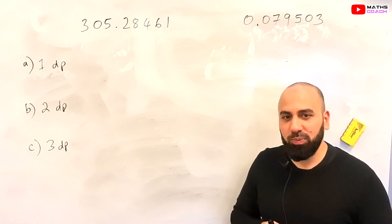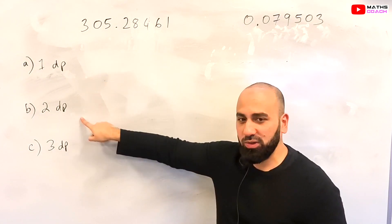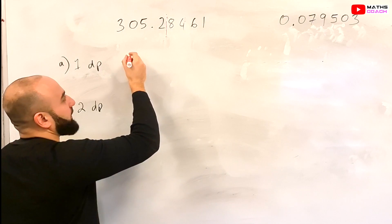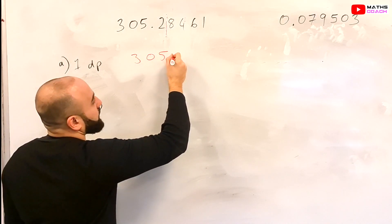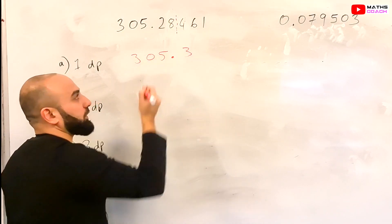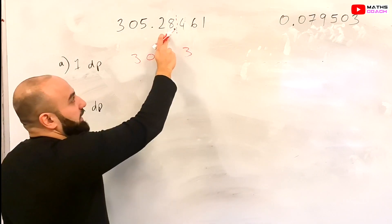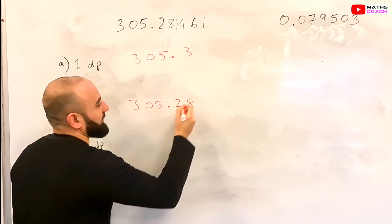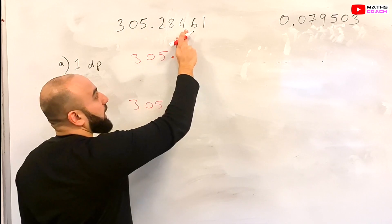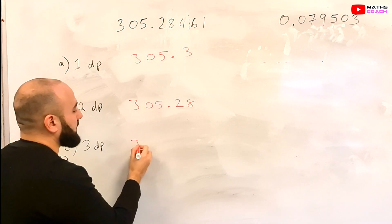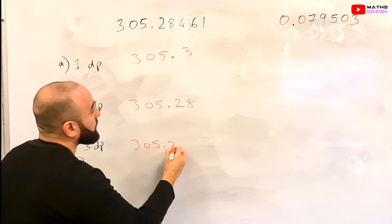Now you know how to round numbers to decimal places — try these two questions. Pause the video and have a go. Rounding this number to one decimal place: we draw a line after the 2 and look at the number next to it. Because it's 5 and above, we increase the 2 to a 3, so our answer is 3.053. To two decimal places, we draw a line after the 8. Because the number next to it is less than 5, we keep the 8 as it is, and the answer is 3.0528. To three decimal places, we draw a line after the 4. If it's above 5 we increase the 4 to a 5, so our answer is 3.05285.